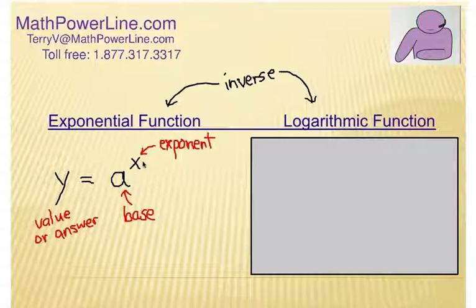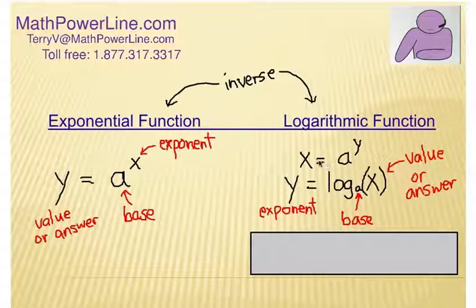The logarithmic function is the inverse of the exponential function. We switch the x and y, giving us x equals a to the y. To write something in logarithmic form, we put the base number right next to log. The logarithm base a of x equals y. Notice how y is the power - the logarithm is always the exponent. You're searching for the exponent. When we write y equals log base a of x, that means a to the what power equals x? a to the y power equals x.